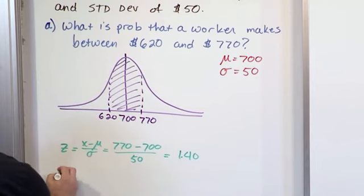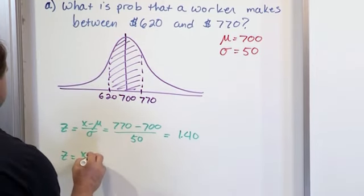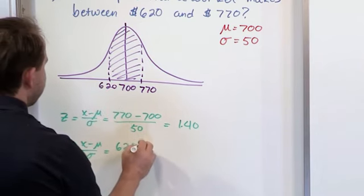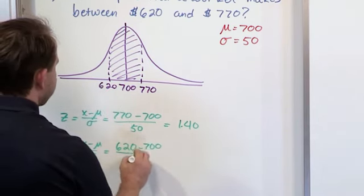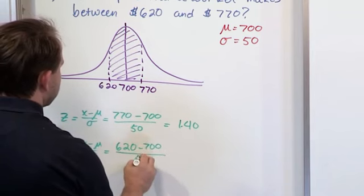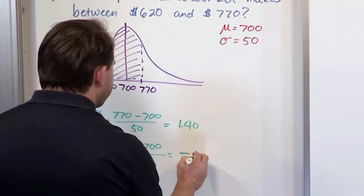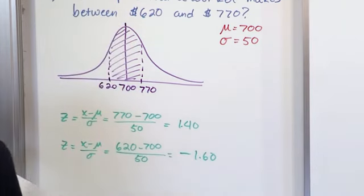Now for the other z-score, again, it's x minus mu over sigma, 620 minus 700, that's the mean value, over the standard deviation of 50. And when you do that subtraction and do that division, you get negative 1.60.